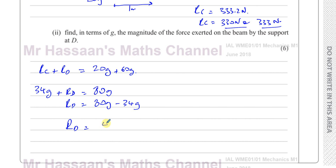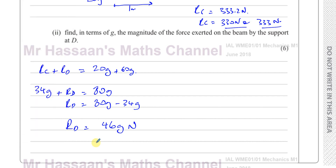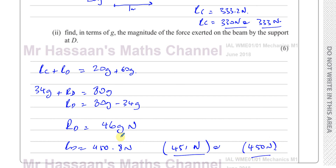Rd equals 80g minus 34g, which is 46g newtons. Multiplying by 9.8 gives 450.8 newtons, which we can write as 451 N or 450 N. Answers to 3 s.f., 2 s.f., or in terms of g are all acceptable. That's the answer for part a — we've found both Rc and Rd.